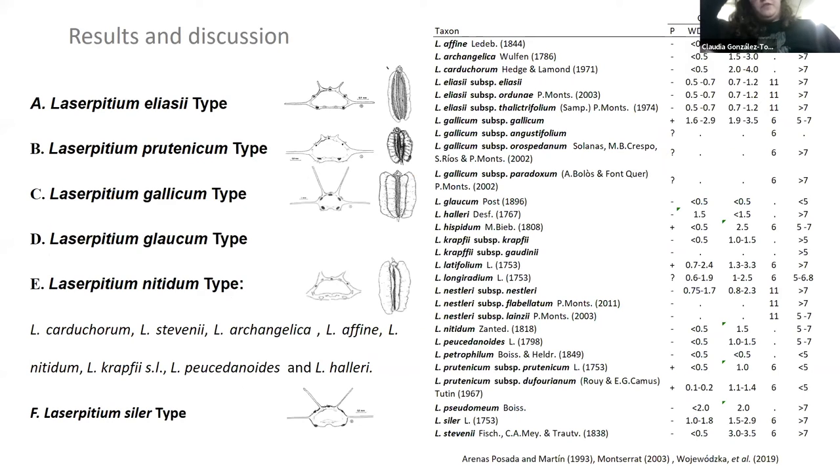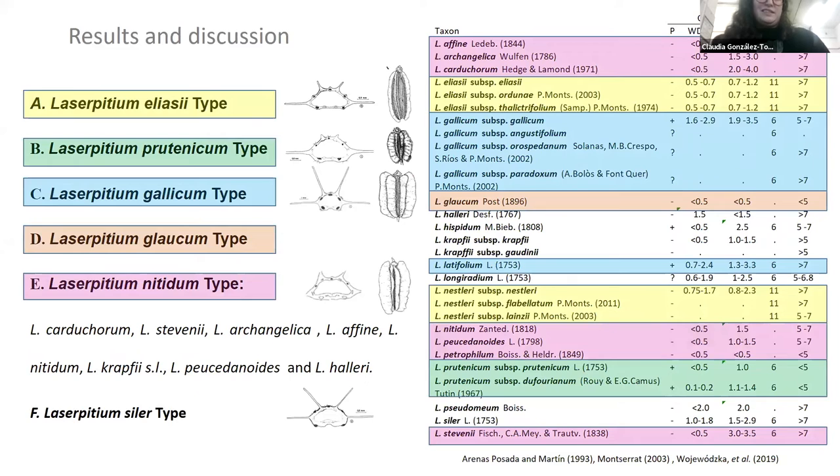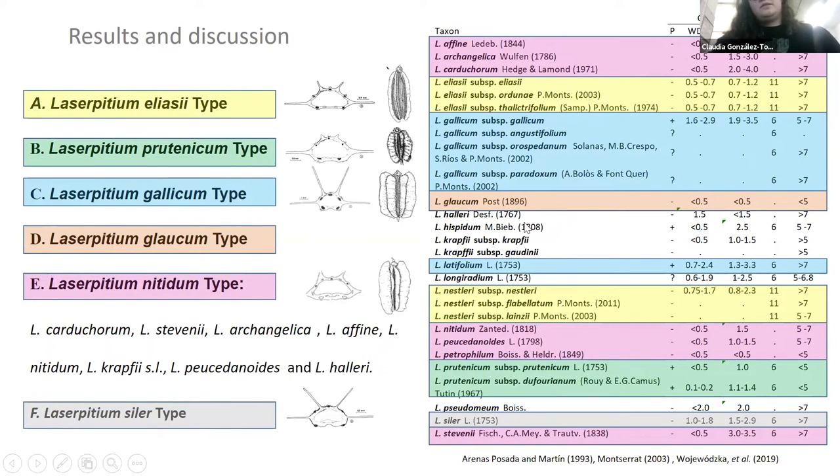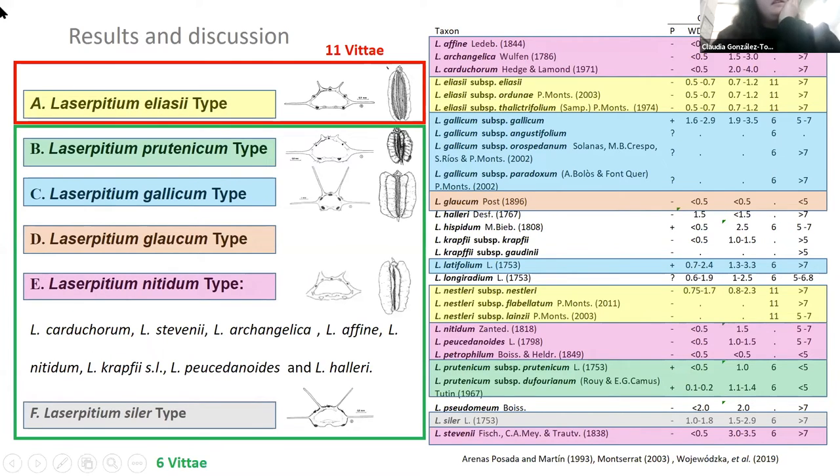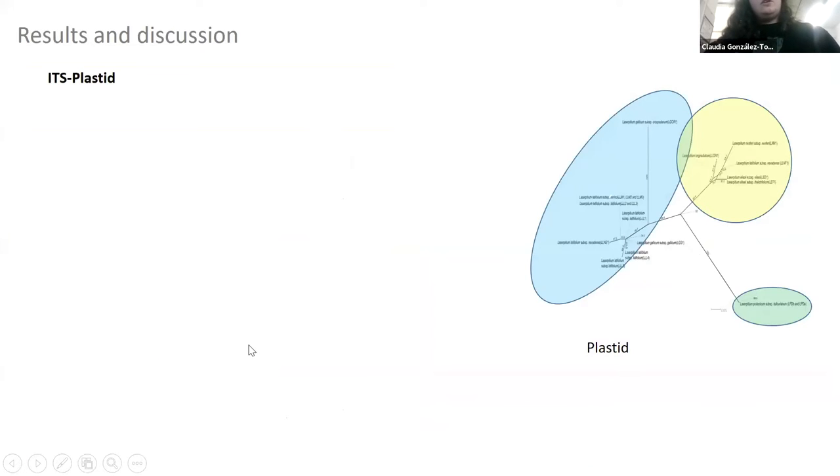So what are our main findings so far? We found that the Laserpitium sensu lato species had mainly six different types of fruit. We found a feature that may be useful, which was the number of vittae. The Laserpitium elaeosalinum type of fruit has 11 vittae, and the rest has 6 vittae.